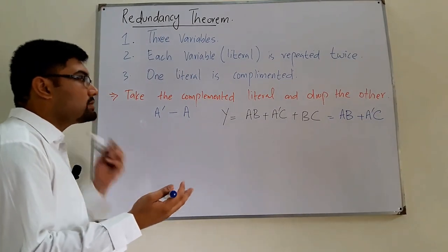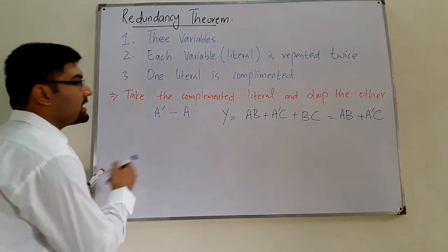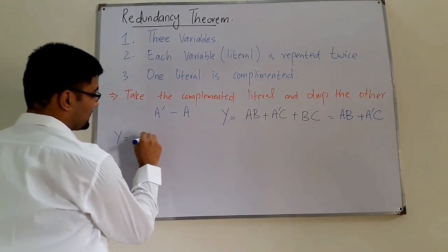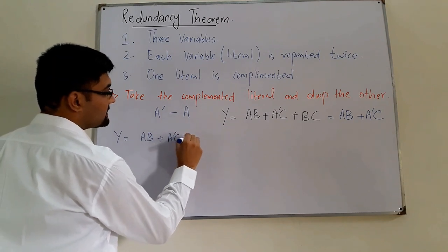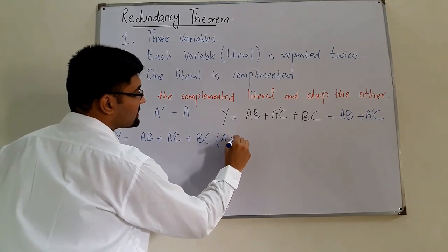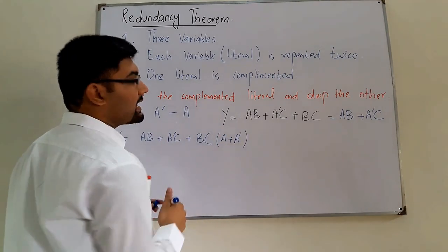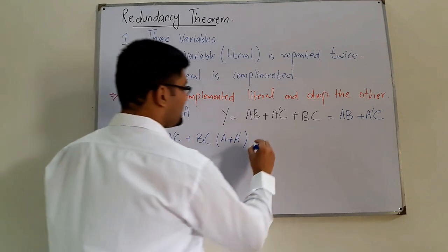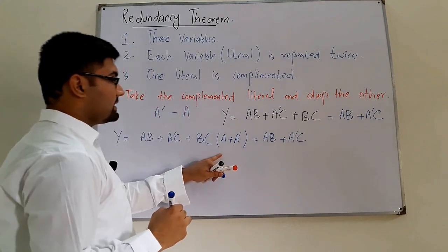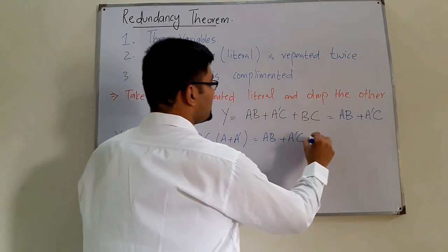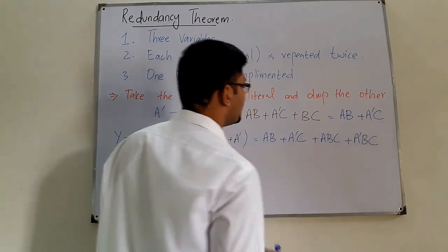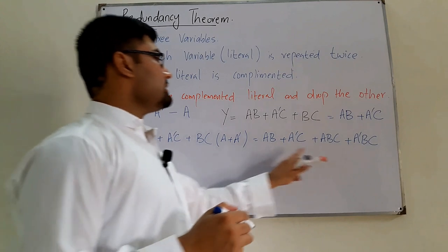Now if you want to prove this, starting from Y = AB + A'C + BC, we introduce A into the third term. BC equals BC·1, and since A + A' = 1, we can write it as AB + A'C + ABC + A'BC.